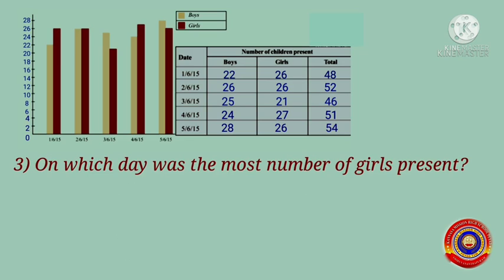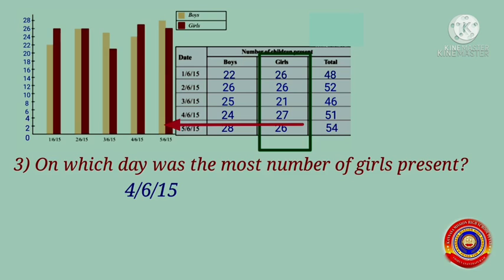Question 3: On which day was the most number of girls present? Look at the number of girls column in the table and find out on which day was the most number of girls present. Yes, it was on 4th June 2015, and the number of girls present on that day is equal to 27.